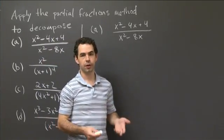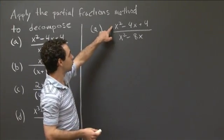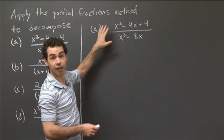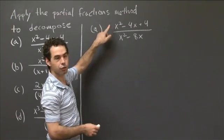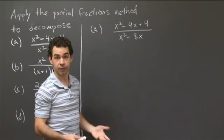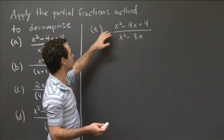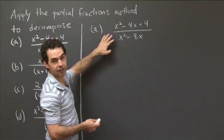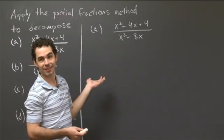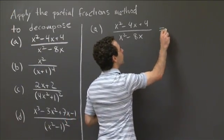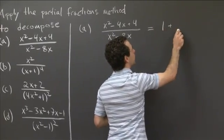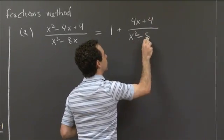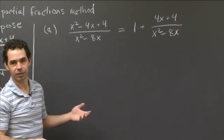The first thing to do when you start the partial fraction method is check that the degree of the numerator is smaller than the degree of the denominator. In this case, that's not true — the degree on top is 2 and the degree on bottom is 2, so we need to do long division. Long division always works to reduce the degree of the top so that it's smaller than the degree of the bottom. It's not too hard to check that this equals 1 plus (4x + 4) over (x squared minus 8x).